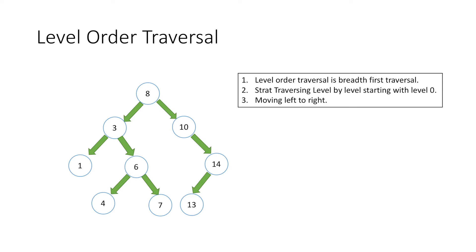First let's classify our tree into various levels, starting with the root node as level 0. Moving forward, node 3 and node 10 will be at level 1. Node 1, 6 and 14 will be at level 2, and finally node 4, 7 and 13 will be at level 3.